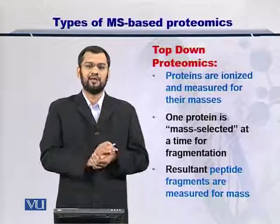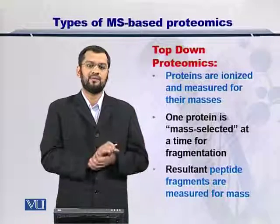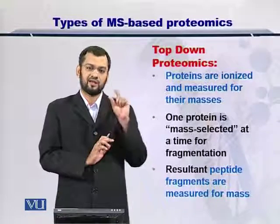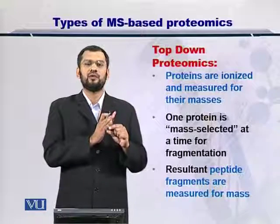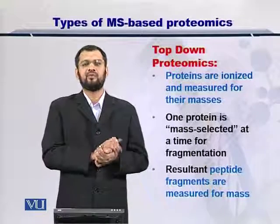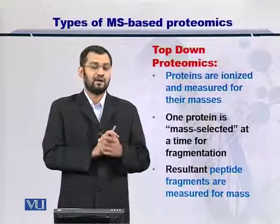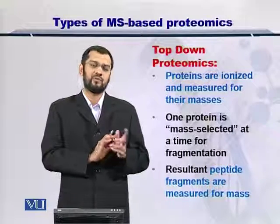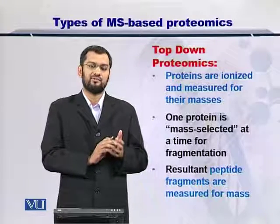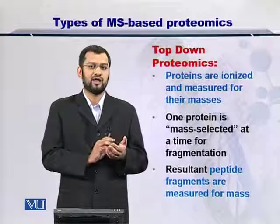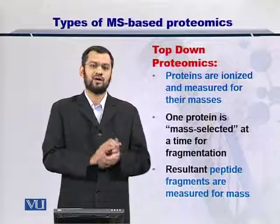Next, the protein is selected from the milieu. There can be multiple proteins in the sample, so you mass-select a specific protein and then fragment it using some protein fragmentation technique. Once you fragment the protein, there will be multiple peptides again. Remember, this is different from bottom-up proteomics, because in bottom-up proteomics you fragment the protein using enzymes, but in top-down proteomics you are not using enzymatic digestion — rather, you use other sophisticated methods that we will discuss later.